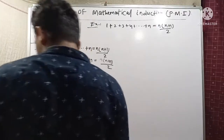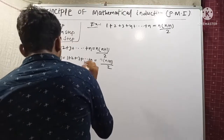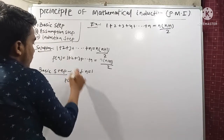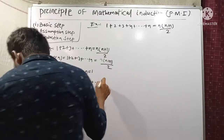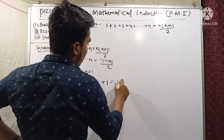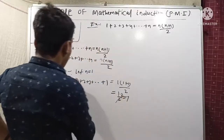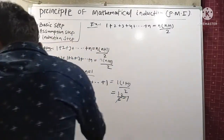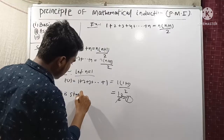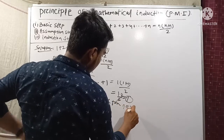Basic Step: Let n = 1. Then the left-hand side equals 1. The right-hand side equals 1 × (1+1)/2 = 2/2 = 1. So P(1) equals 1. This statement is true for n = 1.